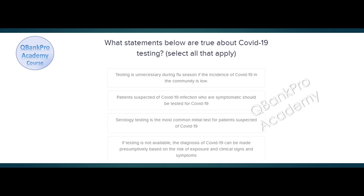What statements below are true about COVID-19 testing? Select all that apply. Testing is unnecessary during flu season if the incidence of COVID-19 in the community is low. Patients suspected of COVID-19 infection who are symptomatic should be tested. Serology testing is the most common initial test for patients suspected of COVID-19. If testing is not available, the diagnosis of COVID-19 can be made presumptively based on the risk of exposure and clinical signs and symptoms. The correct answer is patients suspected of COVID-19 infection who are symptomatic should be tested, and if testing is not available, the diagnosis can be made presumptively based on risk of exposure and clinical signs and symptoms.